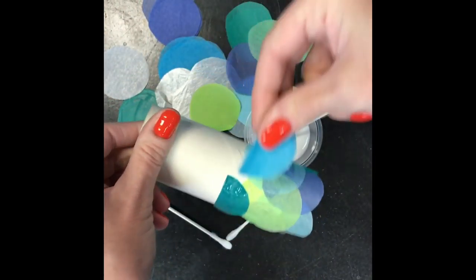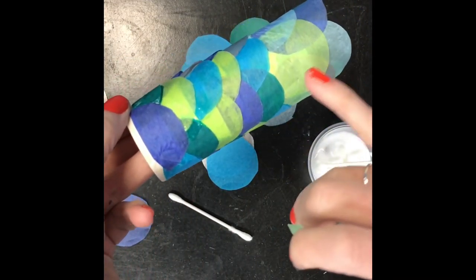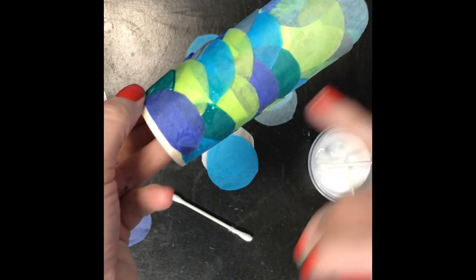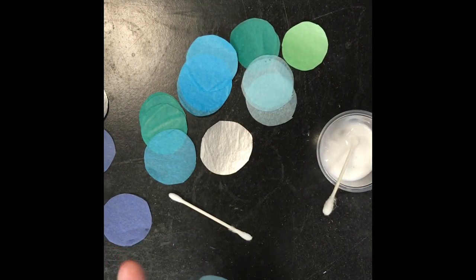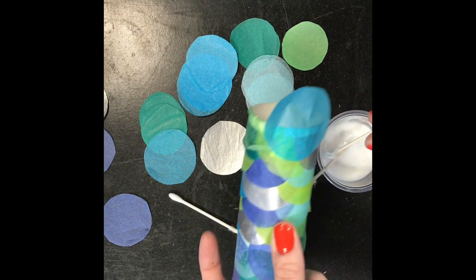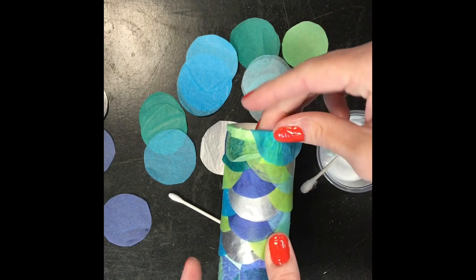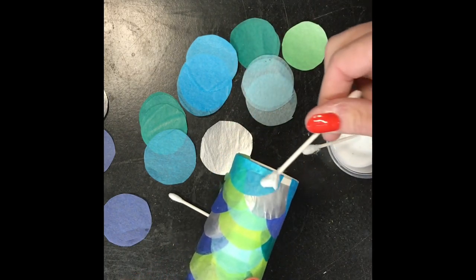Before you know it, you'll have the whole tube done, which looks super cool. I don't want that white line around the top, so we're going to take the circle pieces and layer them so they extend over the top, put some glue on the inside, and fold over the lip.